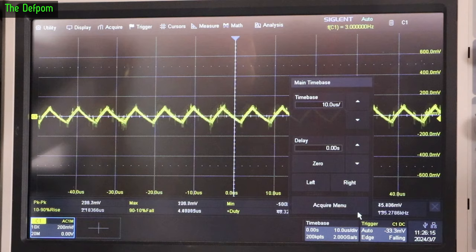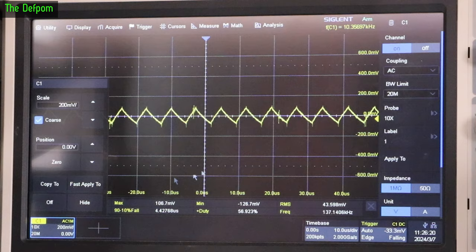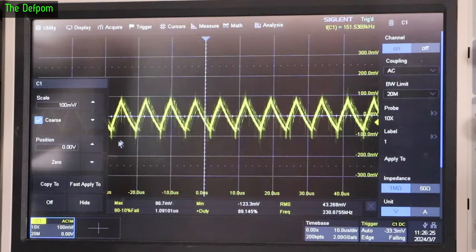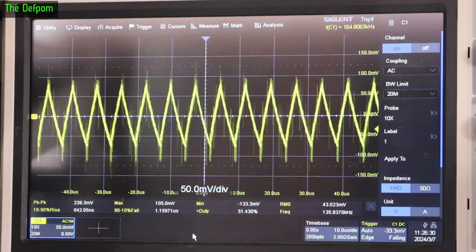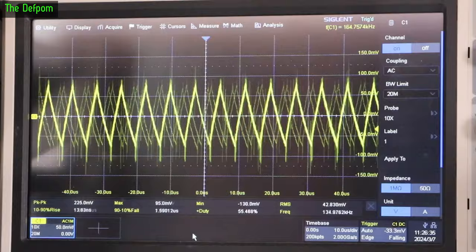So let's just do 100 millivolts per division. Make it a bit bigger. Actually, I'll go even bigger. 50 millivolts per division. There you go. So that's the loading. And that's the noise we get out of this device. Which, it's kind of okay. 100 millivolts. Eh.